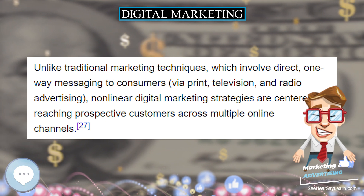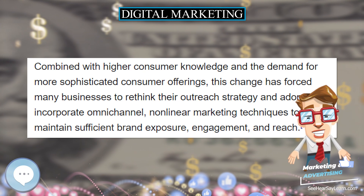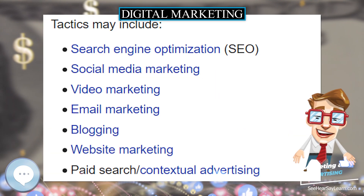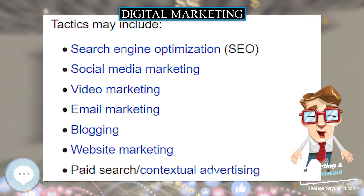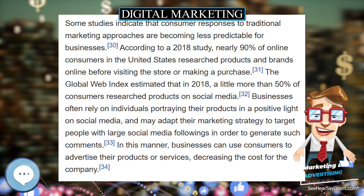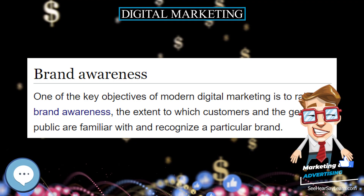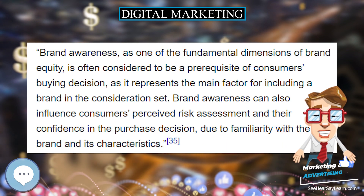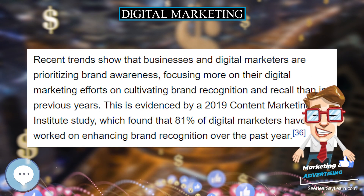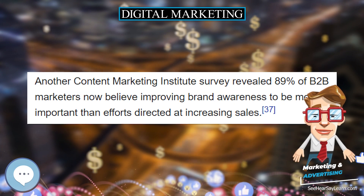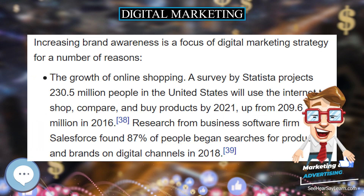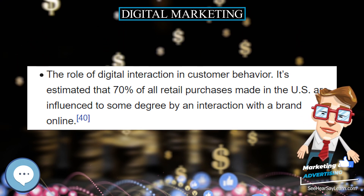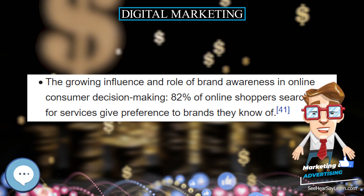One way marketers can reach out to consumers and understand their thought process is through an empathy map. An empathy map is a 4-step process: first, asking questions that the consumer would be thinking in their demographic; second, describing the feelings the consumer may be having; third, thinking about what the consumer would say in their situation; and finally, imagining what the consumer will try to do based on the other three steps. Web analytics are also a very important way to understand consumers, showing the habits that people have online. Predictive analytics helps marketers figure out what route consumers are on and creates different predictions of what people will do so that companies can strategize based on people's trends.